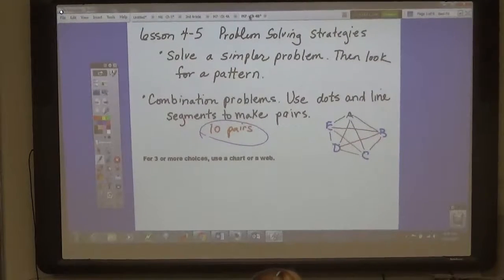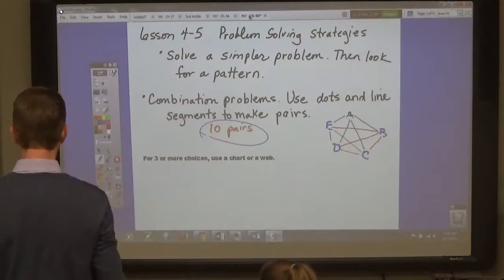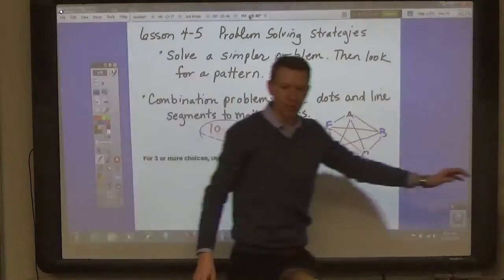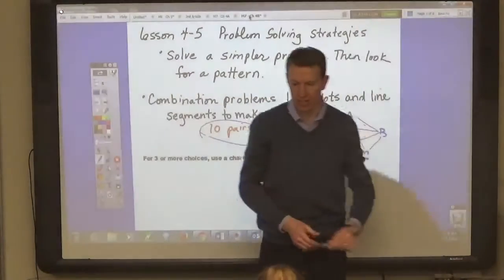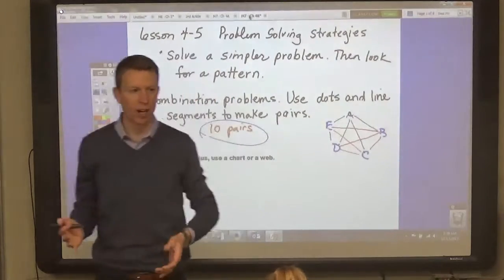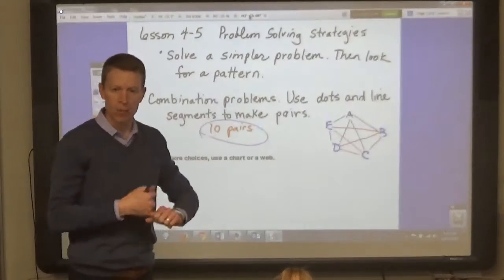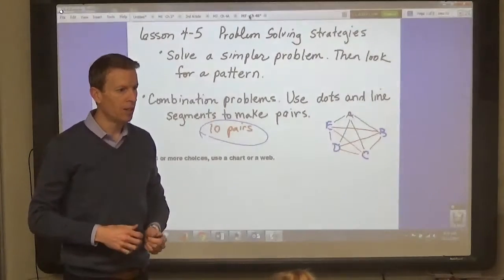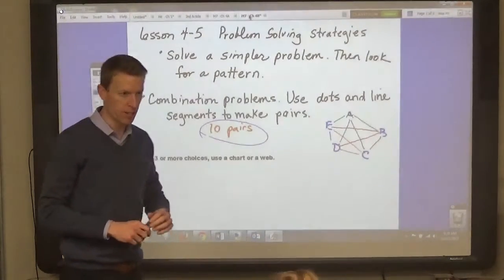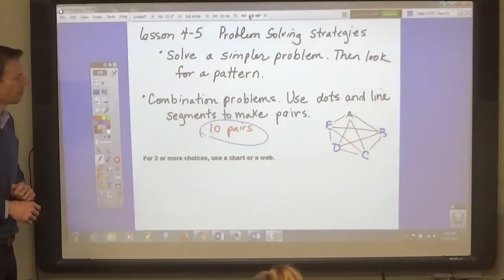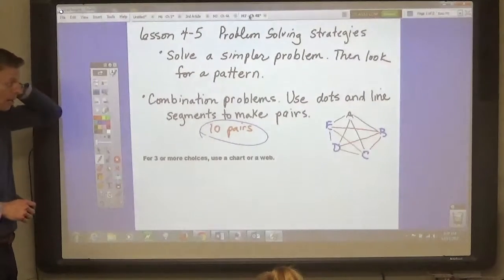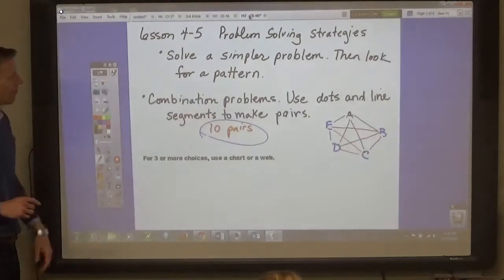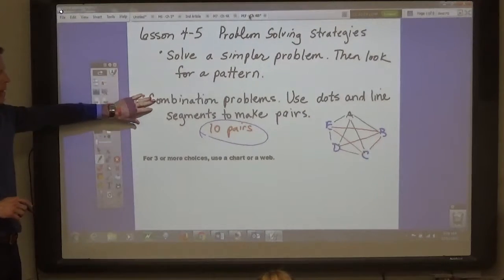Seventh graders, lesson four or five. We're going to solve combination problems. We're going to talk about problem solving and solving problems that involve combinations — like when you go into a restaurant and you've got some choices that you have to make, we're going to talk about how many different choices you have. Now first, the first thing we're going to talk about is solving combination problems to make pairs.